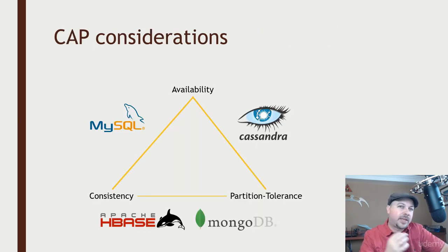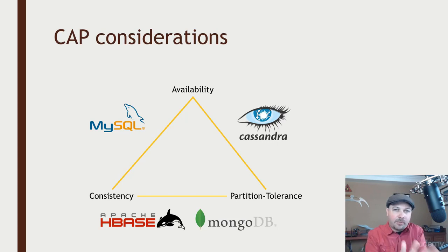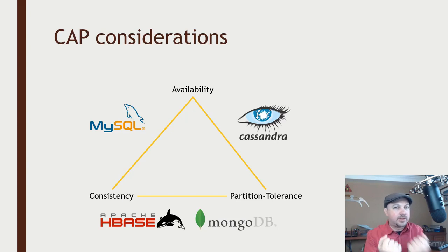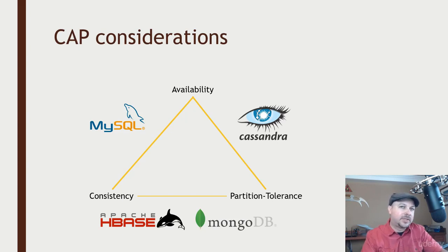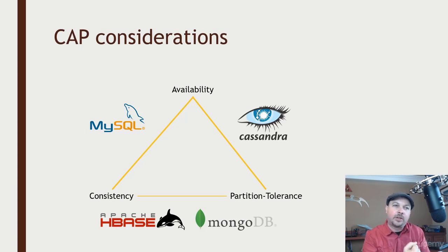Something you do want to consider is the CAP theorem, where we need to pick two out of three: consistency, availability, or partition tolerance. The way to think about this is when considering the scale of your requirements — do you need partition tolerance? Do you have sufficient scale where you know you're going to eventually need more than one server? If so, partition tolerance is non-negotiable. You need that one, and your only real choice in that case is consistency or availability, and that will determine which side of the triangle you want to lean toward.